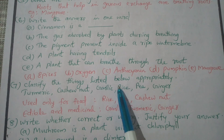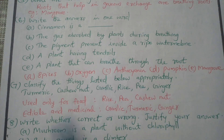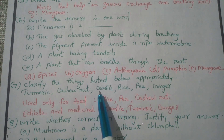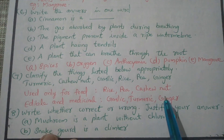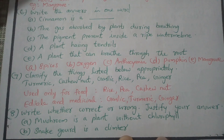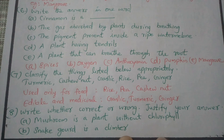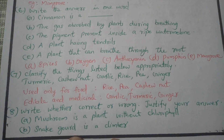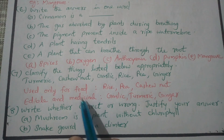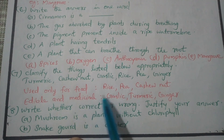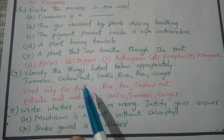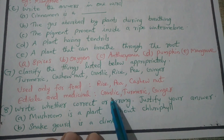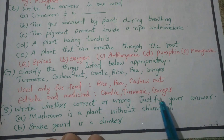Classify the following items into two categories — used only for food, and used for both edible and medicinal purposes. Items: turmeric, cashew nut, garlic, rice, pea, ginger. Used only for food: rice, pea, cashew nut. Used for both edible and medicinal purposes: garlic, turmeric, ginger.